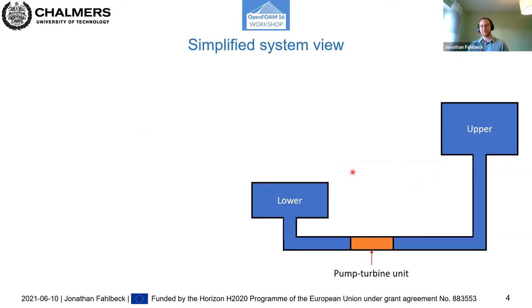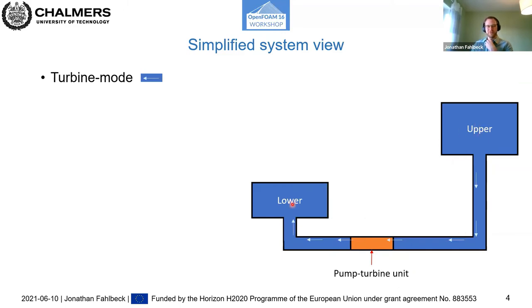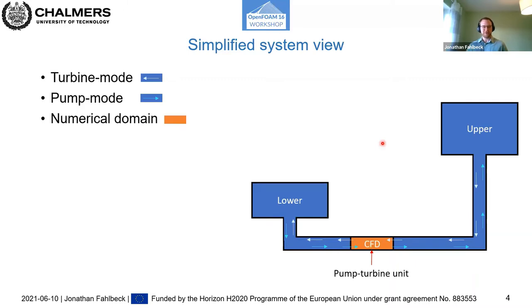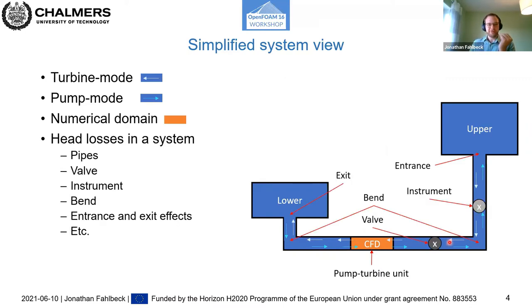In a simplified system view, you have a lower and upper reservoir, some piping, and a pump turbine unit in between. In turbine mode the flow goes from upper to lower reservoir; in pump mode from lower to upper. Typically the numerical domain concerns only the pump turbine unit, mimicking the system via predefined boundary conditions. In this work we developed a new boundary condition that can cope with losses in a full system — including friction in pipes, valves, entrance and exit effects.